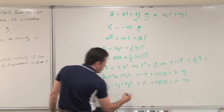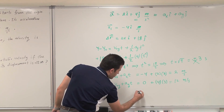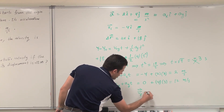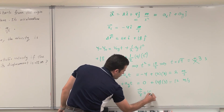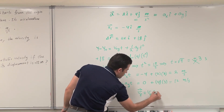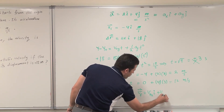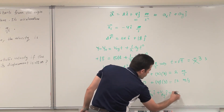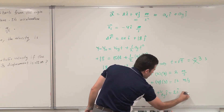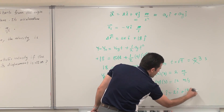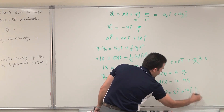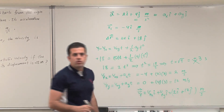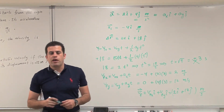Now I can write the final velocity vector since the question asks for velocity. V-final equals v-final-x i-hat plus v-final-y j-hat, which is 2i-hat plus 12j-hat, all in units of meters per second. And this concludes the answer. Thank you.